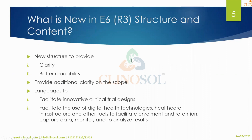Moving to what's new in E6 R3 structure and content: one of the key changes is that the new structure provides more clarity and better readability compared to E6 R2. E6 R3 provides additional clarity on scope — some scope not included in R2 is now added. It also facilitates innovative clinical trial designs. After COVID, we got many new designs like decentralized, quality by design, basket, and umbrella designs.